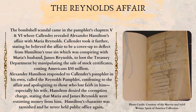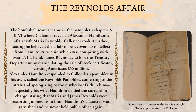The Reynolds Affair. The bombshell scandal came in the pamphlet's chapters 5 and 6, where Callender revealed Alexander Hamilton's affair with Mariah Reynolds. Callender took it further, stating he believed the affair to be a cover-up to deflect from Hamilton's true sin, which was conspiring with Mariah's husband, James Reynolds, to loot the Treasury Department by manipulating the sale of stock certificates, costing Americans $50 million. Alexander Hamilton responded to Callender's pamphlet in his own, called the Reynolds pamphlet, confessing to the affair and apologizing to those who lost faith in him, especially his wife. Hamilton denied the corruption charge, saying that Mariah and James Reynolds were extorting money from him. Hamilton's character was tarnished and he never held public office again.